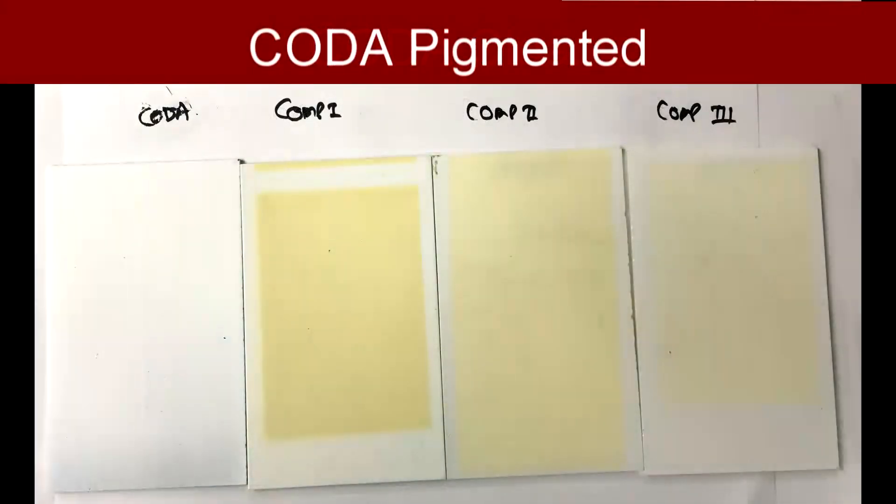Similarly, on the pigmented coating film samples, COTA on the left outperformed the competition on the right. After 1,000 hours of QUV exposure, the COTA primer saw minimal color change compared to the competition. The COTA pigmented top coat enjoyed similar success.